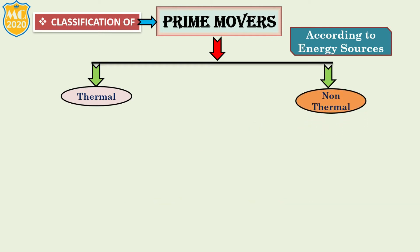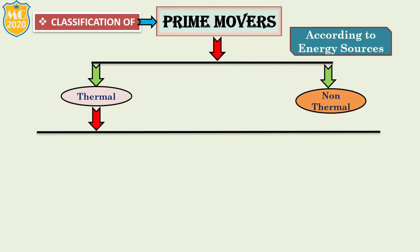First, we understand the meaning of thermal. Thermal energy is the kinetic energy associated with the random motion of the molecules of a material or object — in other terms, we call it heat energy. Thermal prime movers are further classified into five different categories.